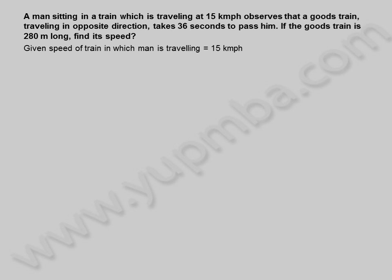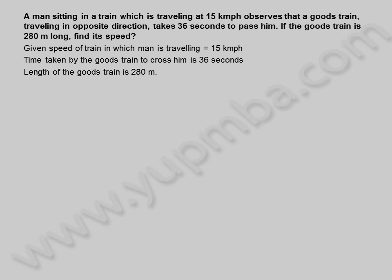Given: speed of train in which man is traveling is equal to 15 km per hour. Time taken by the goods train to cross him is 36 seconds. Length of the goods train is 280 meters.